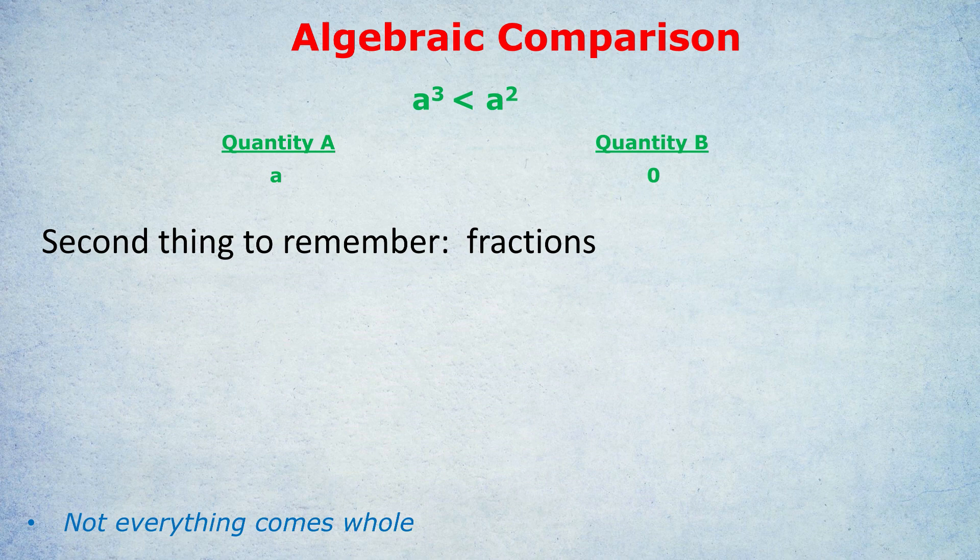So we don't know whether A is negative — because that works — or A is a positive fraction. Therefore we don't know which quantity is bigger, A or 0. The answer is D. Always remember: not everything comes as whole numbers; there are also fractions to consider.